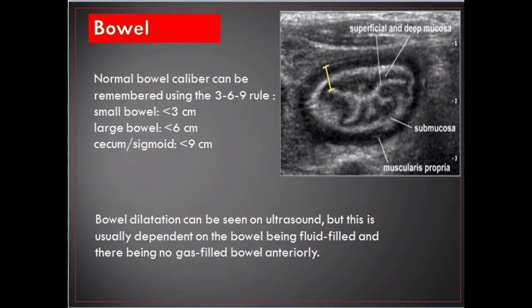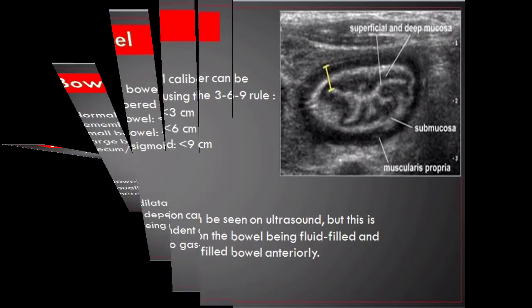Bowel. Normal bowel caliber can be remembered using the 3-6-9 rule: small bowel less than 3 centimeters, large bowel less than 6 centimeters, cecum and sigmoid below 9 centimeters. Bowel dilatation can be seen on ultrasound but is usually dependent on the bowel being fluid-filled with no gas-filled bowel anteriorly.